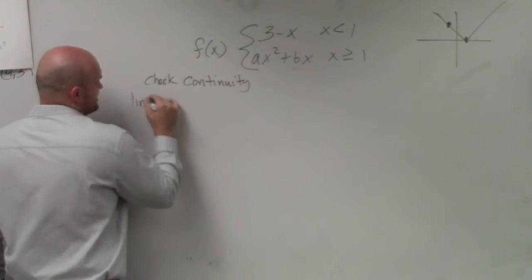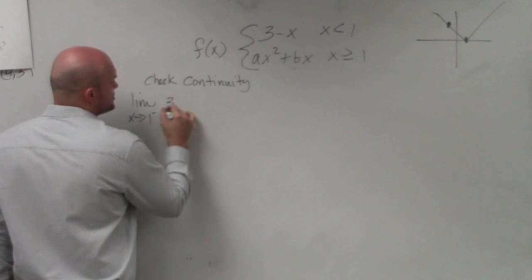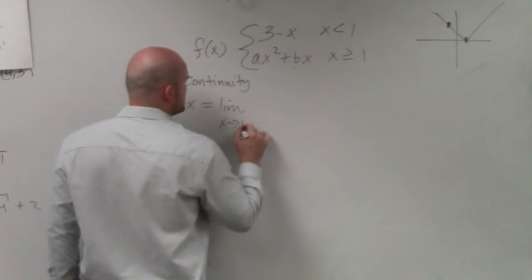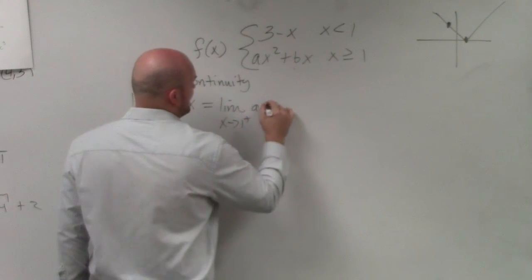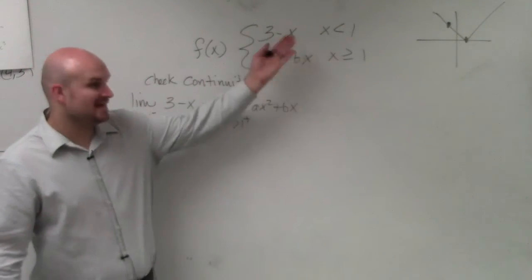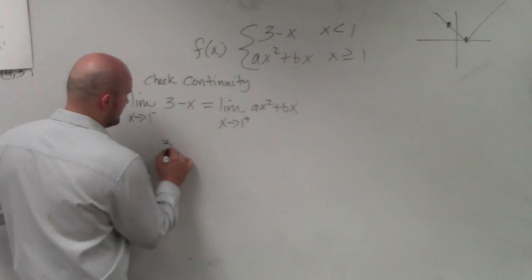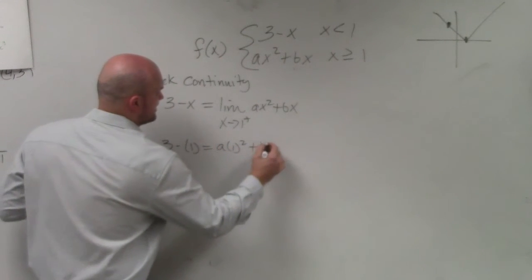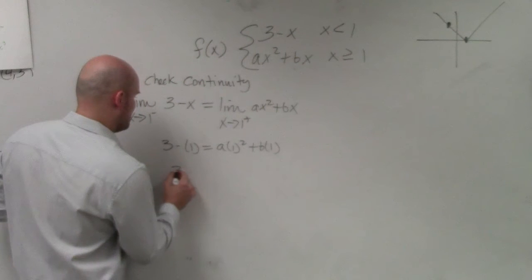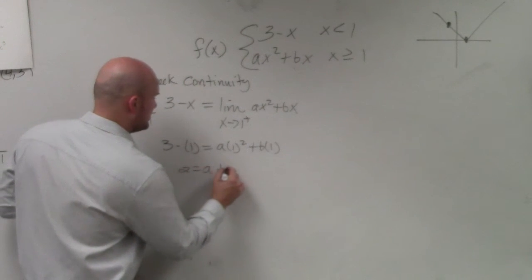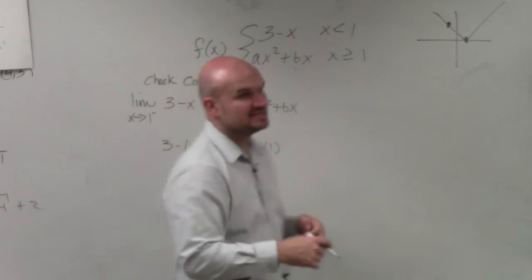So I'd say the limit as x approaches 1 from the left, which is 3 minus x, has to equal the limit as x approaches 1 from the right, which is ax squared plus bx. Well, again, we're checking this limit as x approaches 1. So I could do 3 minus 1 has to equal a times 1 squared plus b times 1. So therefore, we have 2 equals a plus b.